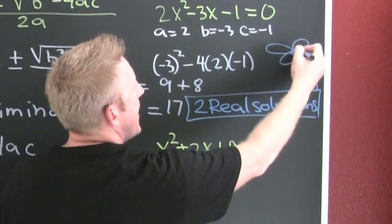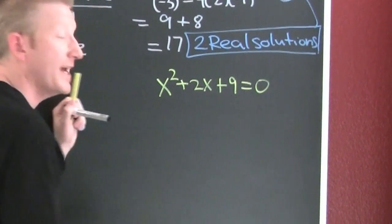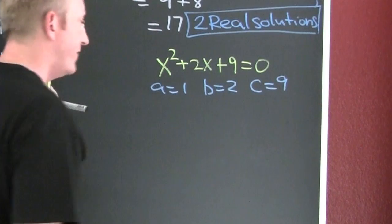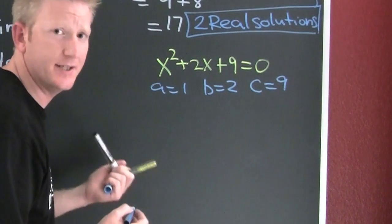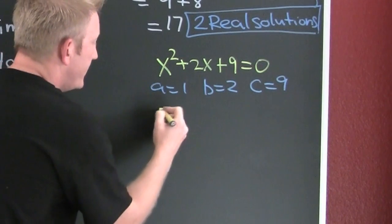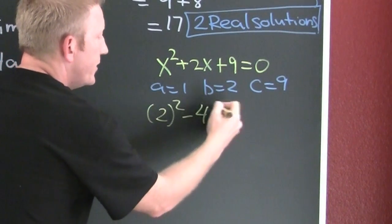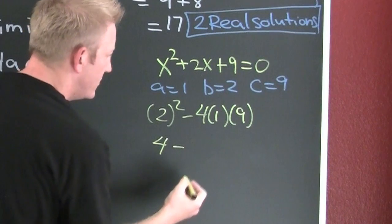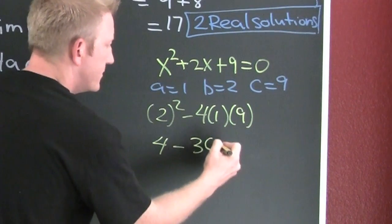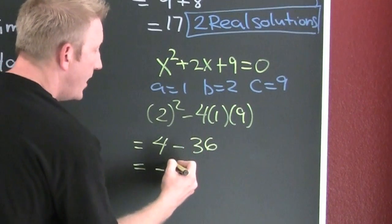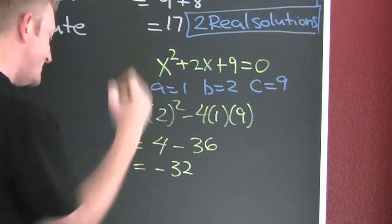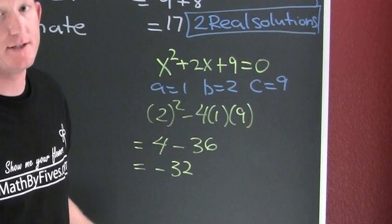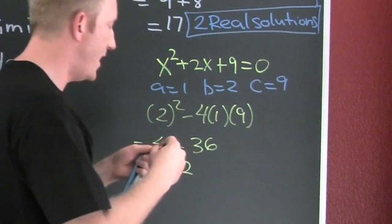In the second example, a is 1, b is 2, and c is 9. Plugging into the discriminant — b squared minus 4ac — gives us 4 minus 36, which equals negative 32. Is that bigger than zero, smaller than zero, or zero? That's smaller than zero, hence giving us two non-real solutions.